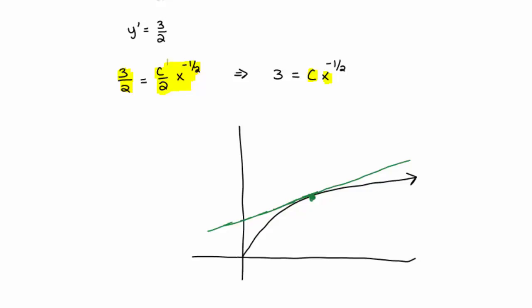However, there's also something else that we can kind of get from the fact that they meet right there. The x value where they meet, those curves have the same y value. That is, y equals c root x is the same as the y value for 3 halves x plus 6.